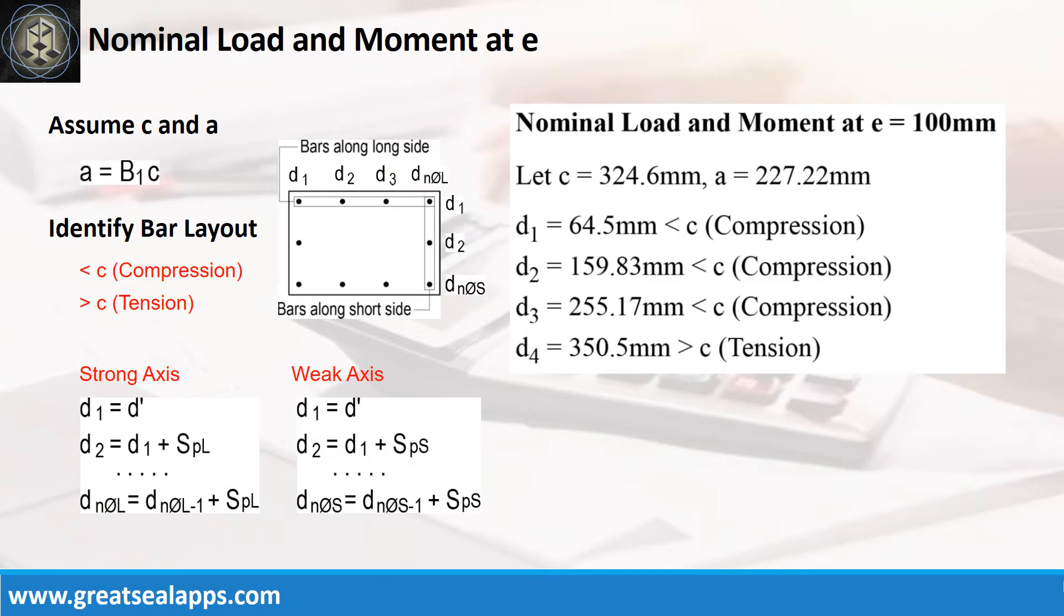To get the nominal load and moment at E equals 100 mm, let neutral axis C equals 324.6 mm and height of stress block A equals 227.22 mm. Given length of column equals 830 mm and steel covering equals 64.5 mm, follow the given computations to get the distances of each bar layer from the edge of column and force type relative to neutral axis.